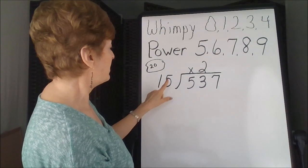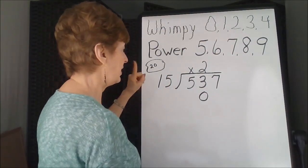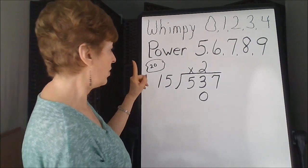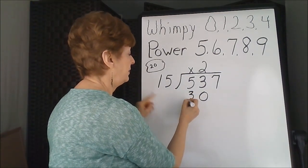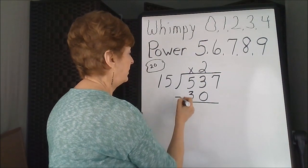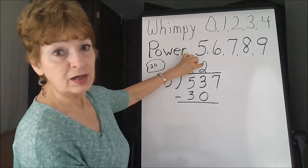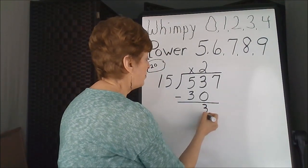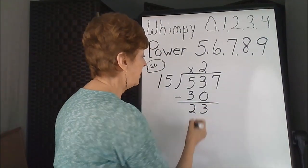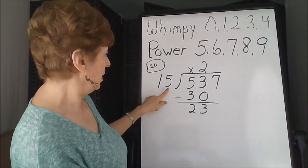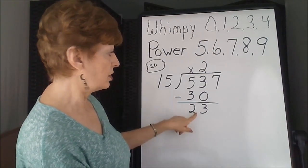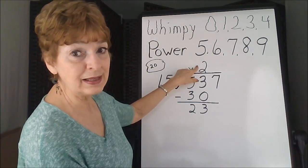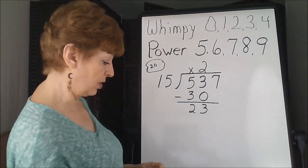2 times 5 is 10, carry 1. 2 times 1 is 2, and 1 more is 3. Our number here is close, if not exact. When we subtract, we're going to get a 23, which means 15 could have gone in more times than 2. So now we know exactly that we need to bump up one more number.